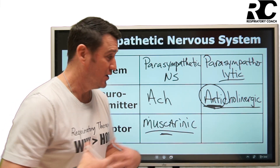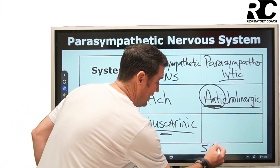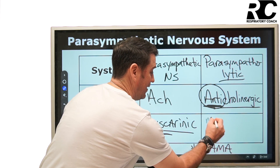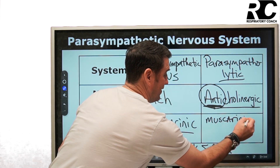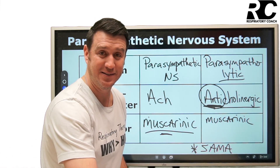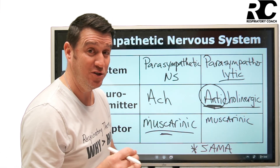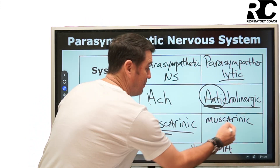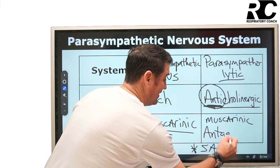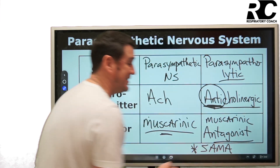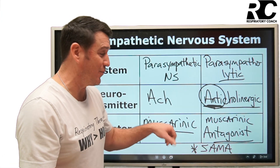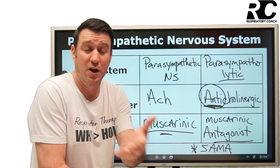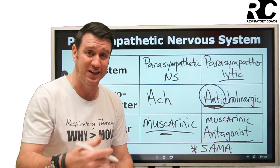We don't want that to happen, so we give a SAMA — S-A-M-A: Short-Acting Muscarinic Antagonist. Beta-2 agonist meant 'go,' but a muscarinic antagonist means the opposite — we park on that receptor but do not create the same effect. We block bronchoconstriction and increased mucous secretions by occupying the receptor without activating it.